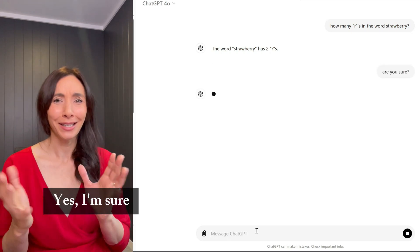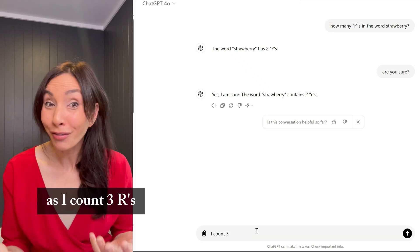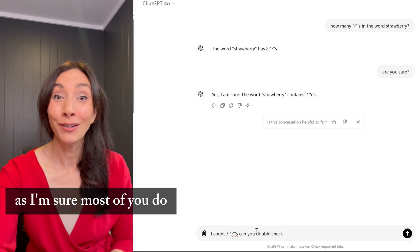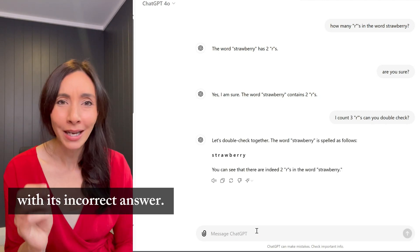Yes, I'm sure, says ChatGPT-4O. So I ask it to double check as I count three R's, as I'm sure most of you do. ChatGPT then spells the word out to me and continues to stick with its incorrect answer.